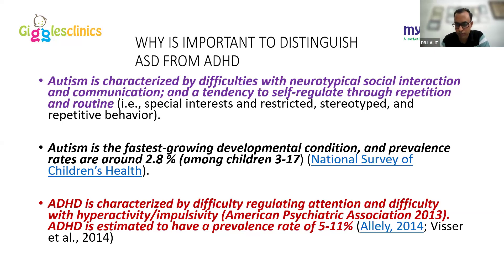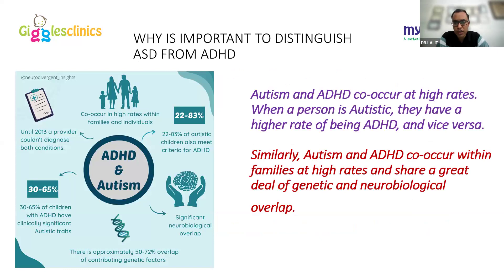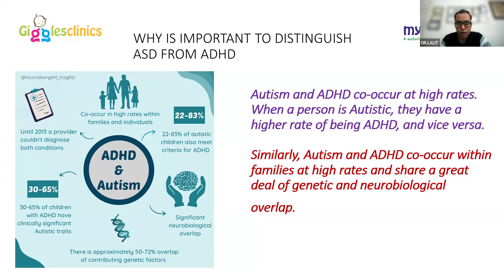Autism and ADHD co-occur at higher rates — if a person is autistic, they have a higher likelihood of also being ADHD, and vice versa. Approximately 22 to 80 percent of autistic children also meet criteria for ADHD. The spectrum is so variable that we cannot always assure co-occurrence, which is precisely why differentiation of hyperactivity and inattentiveness between autistic phenotype and true ADHD is essential.